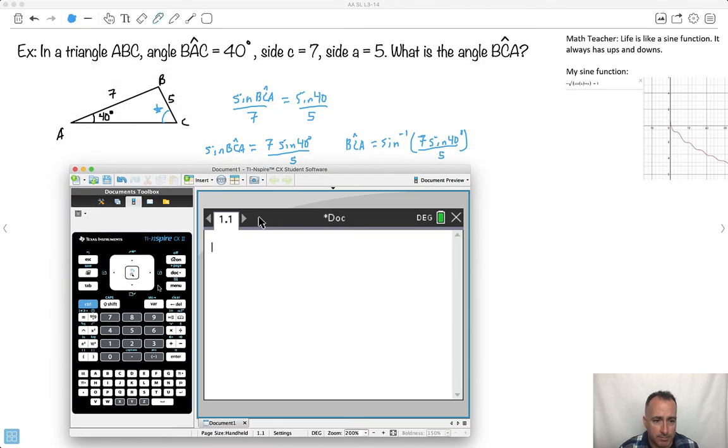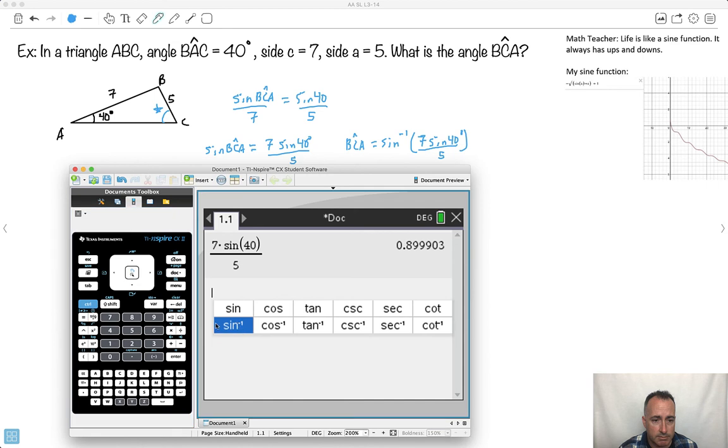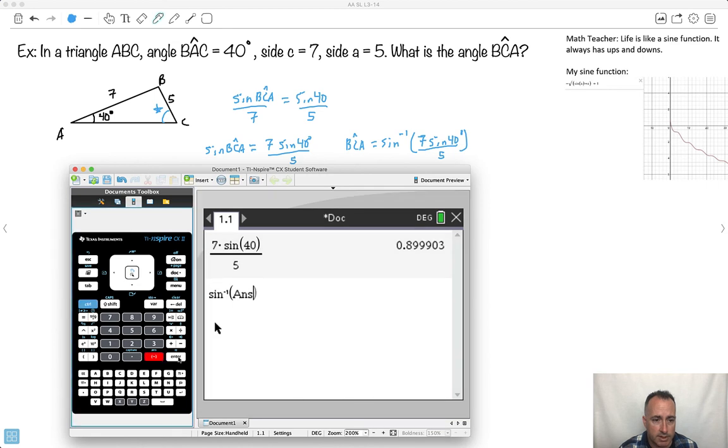I'll do the multiplication. 7 times the sine of 40 degrees divided by 5. Double check I'm in degree mode. I am in degree mode, but I didn't do the 5. That was my answer, and I have to do the inverse sine of that. Inverse sine of the answer. I get 64.1 degrees. I'll say that's BCA.